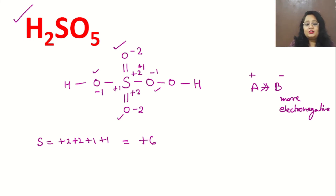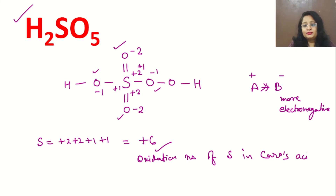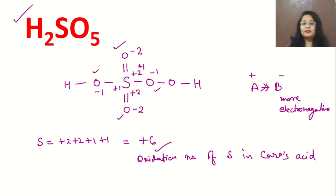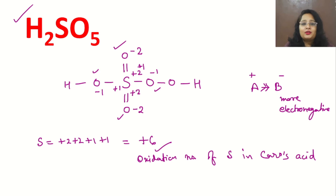This is the correct calculation and the correct oxidation number of sulfur in Caro's acid. If we go through the formula directly, we will definitely get the wrong answer, because there is an oxygen-oxygen bond called the peroxide bond. In that case, oxygen's oxidation state changes. If we use the formula without accounting for the peroxide bond, we will assign minus two to all oxygens and get the wrong answer for sulfur. So this is the complete study of Caro's acid and the oxidation state of sulfur. Thank you for watching this video.